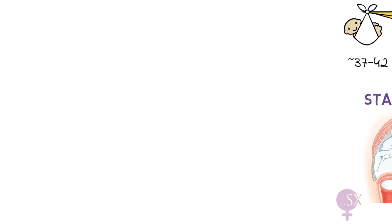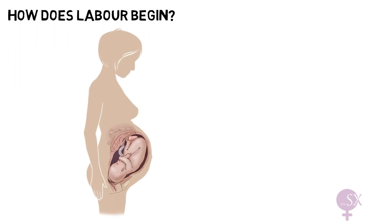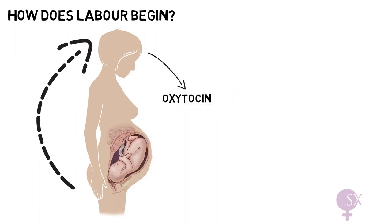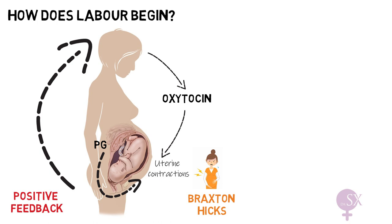Let's have a look at how labor begins. At the end of the third trimester the cervix is being stretched by the baby. Due to release of certain factors, the stretching of the cervix sends signals to the brain which in turn releases oxytocin. Oxytocin then stimulates uterine contractions. At the same time the placenta releases prostaglandins which also stimulate uterine contractions. These uterine contractions force the cervix to stretch even more, stimulating further contractions in a positive feedback loop.